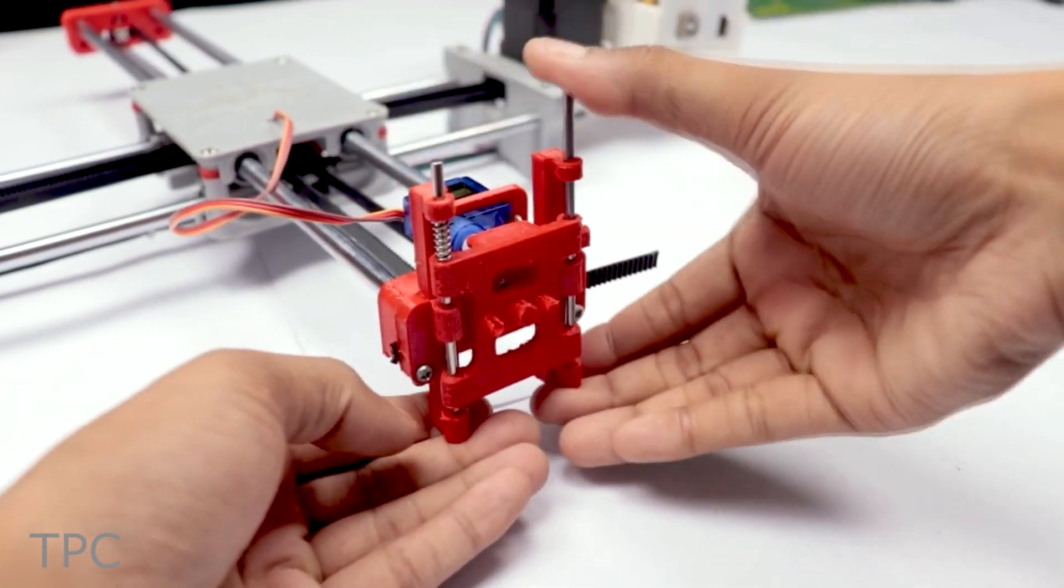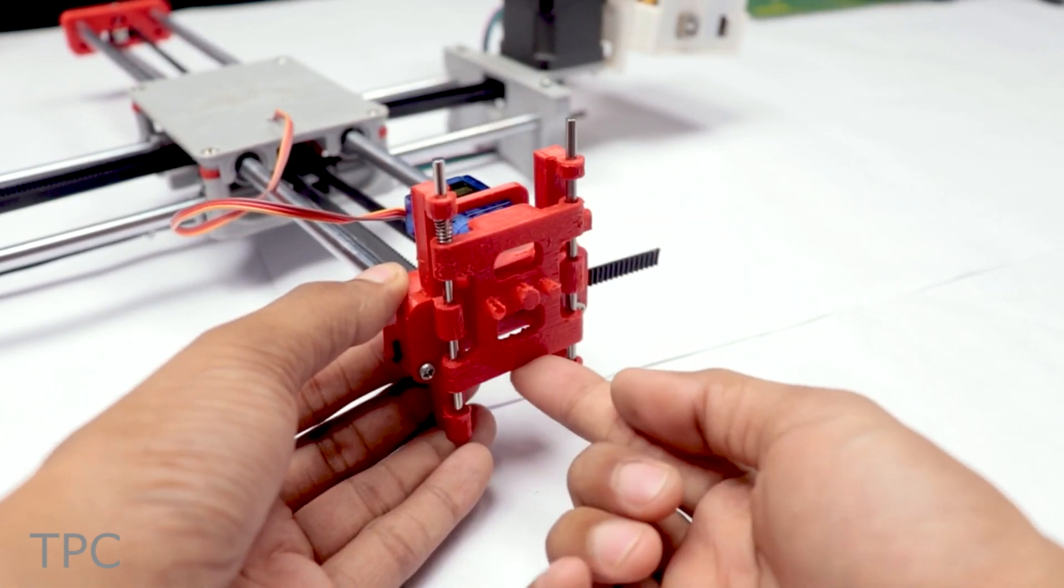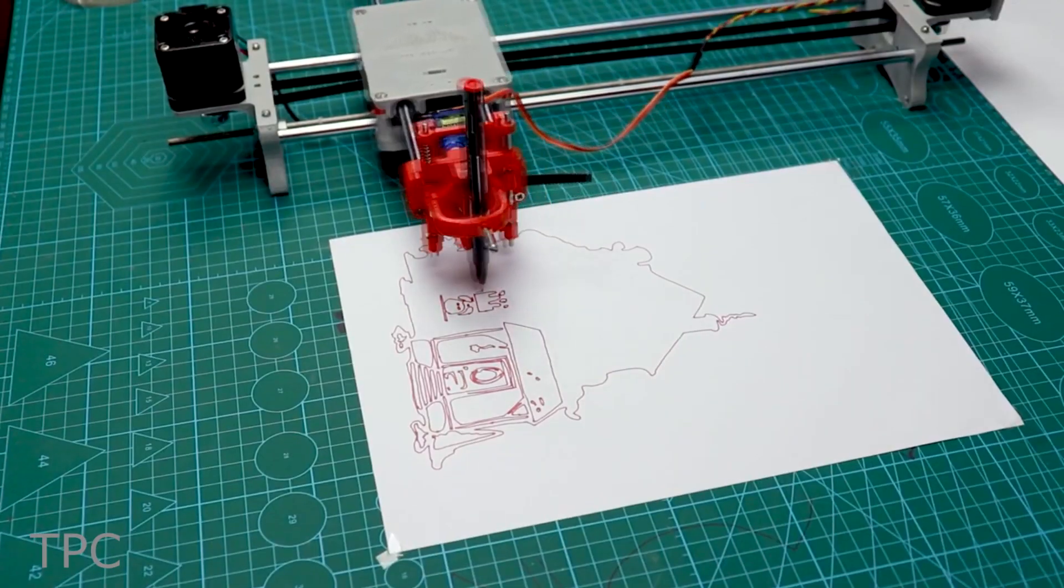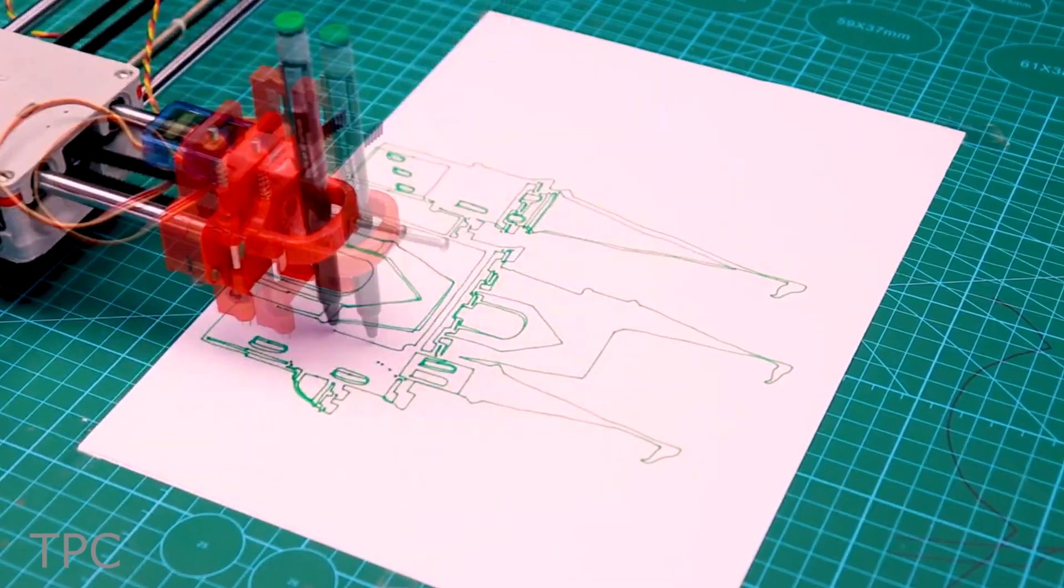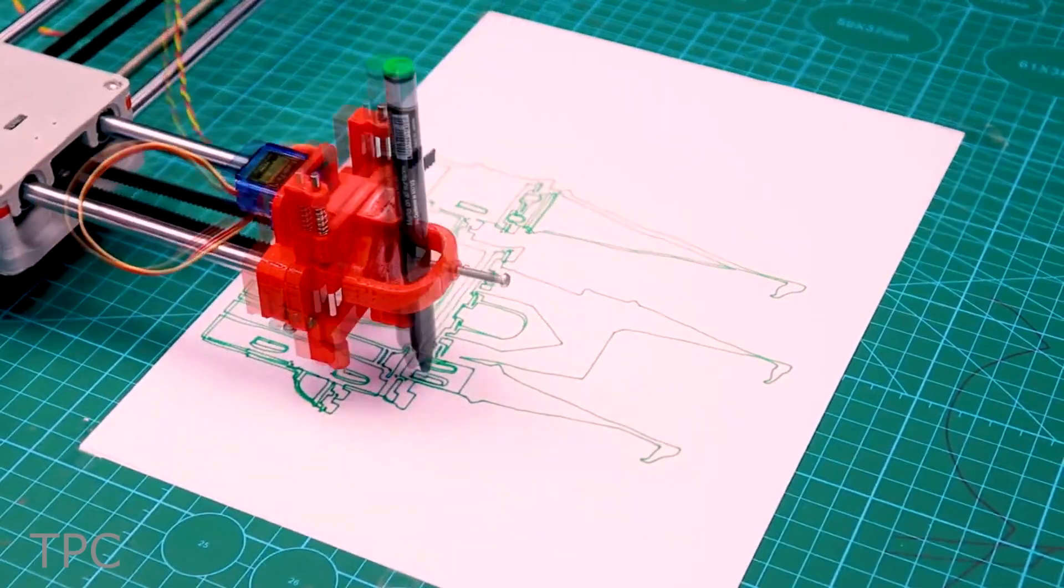The pen mechanism is controlled via a servo motor. This unique design strategy gives the plotter to print easily on most flat surfaces. It can write with different types of pens and come in handy for a variety of applications.